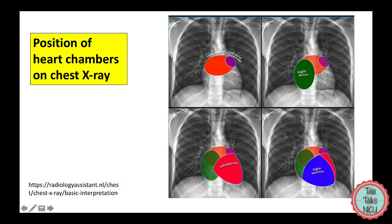Before we go anywhere, let's go over which chambers make up the silhouette of the heart on an x-ray. These are all adult x-rays, so just imagine a baby's heart to be relatively larger compared to the size of the chest. The top part of the cardiac silhouette is taken up pretty much all by the left atrium. The right side is pretty much all right atrium, and the left is mostly the left ventricle. The right ventricle ends up being this little sliver underneath.